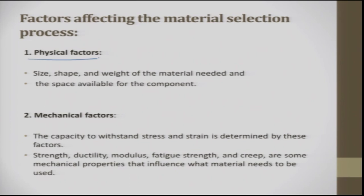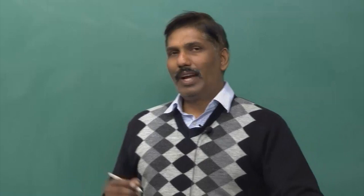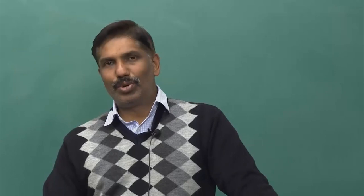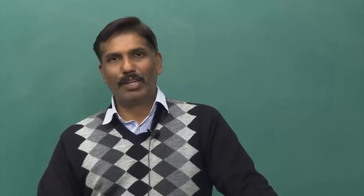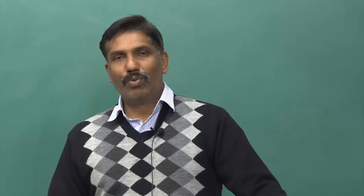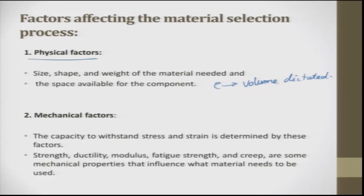In detail, physical factors include size, shape, and weight of the material needed. The space availability for the component is also very important. In reality, several parts put together form a sub-assembly, and several sub-assemblies form a main assembly. Space available for the component matters — for example, if you choose a material with lower density, volume is dictated rather than weight. Like cotton wool, the volume is dictated, not the weight. You should choose material so it fits in the available space.